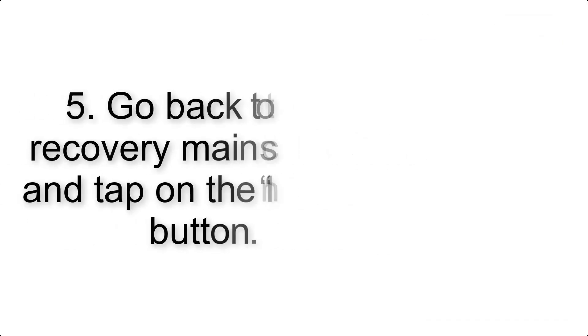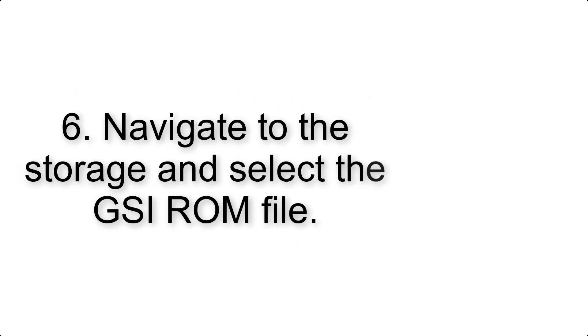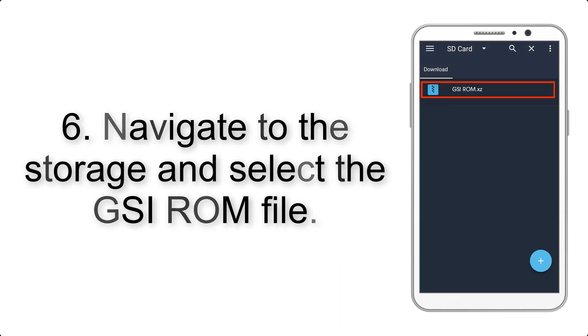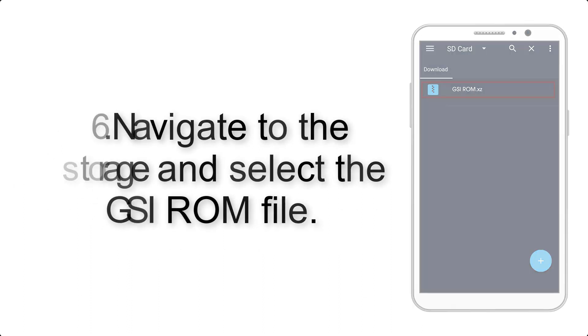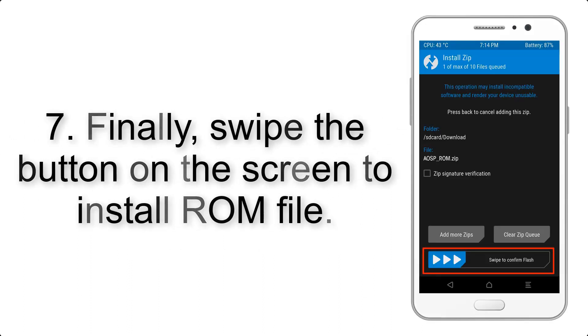Step 5: Go back to the recovery main screen and tap on the Install button. Step 6: Navigate to the storage and select the GSI ROM file. Step 7: Finally, swipe the button on the screen to install the ROM file.